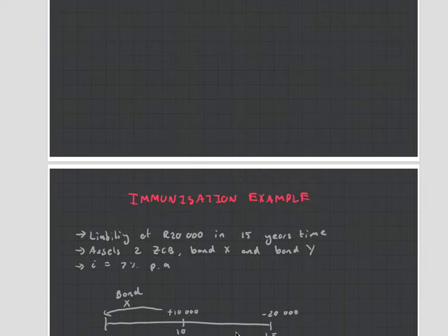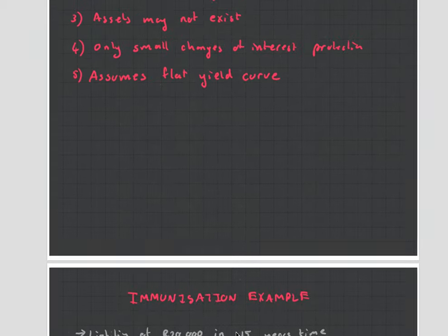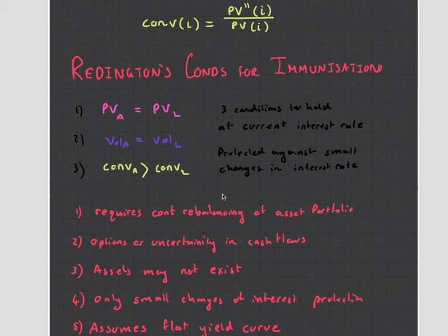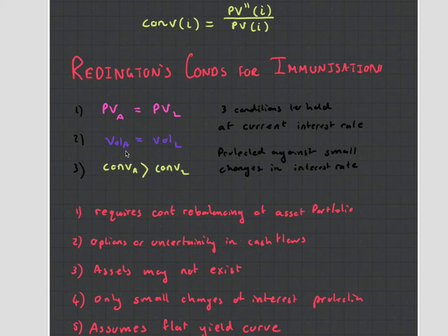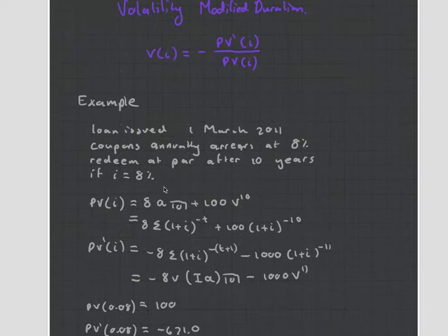I will end off with an example so we all end on the same page. First, present value of assets equal present value of liabilities — you've been doing that the whole course, so I'm not going to go into that. That's the equation of value from chapters 12 and 13. What we're going to look at now is the mathematics behind points 2 and 3, because it is a little bit tricky the first time you come across it.